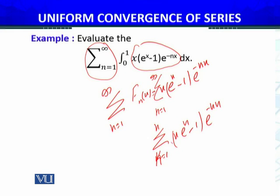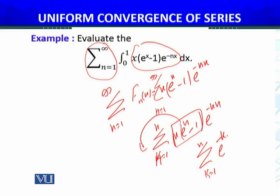The sub-term x · e^(x-1) has no n involved, so it comes outside the summation. I need to check summation k equals 1 to n of e^(-kx). This is the sum I will analyze.